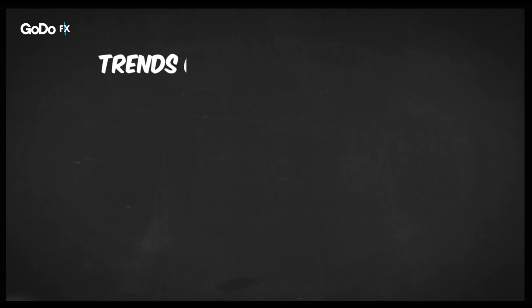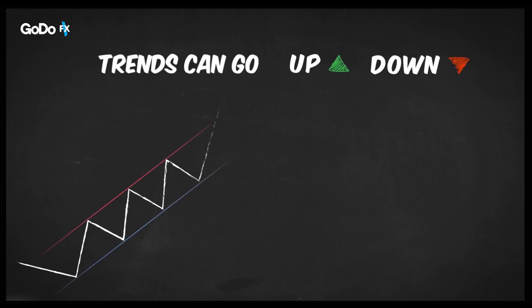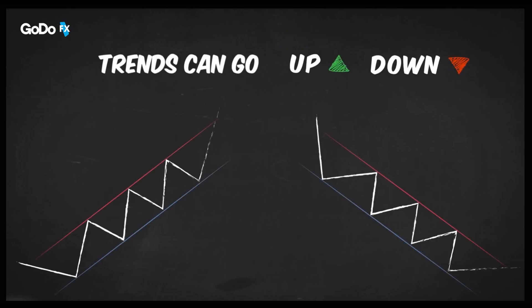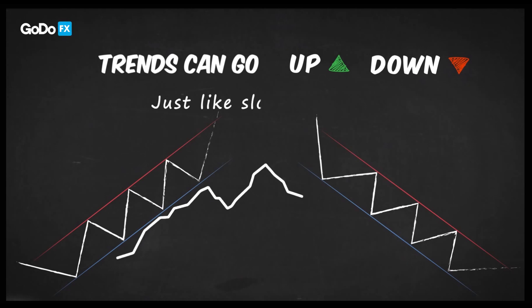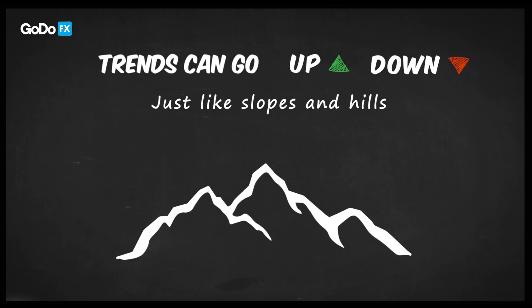It's good to know that trends can go up and down. Lines are not necessarily horizontal — you can have them looking just like slopes and hills. Let's see how this works in practice.